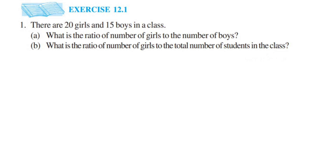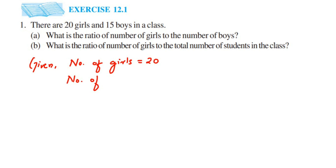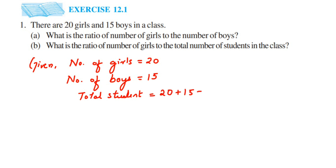Let's write what we know from the question. Number of girls is equal to 20 and number of boys is 15. Total students will be 20 plus 15, which is equal to 35.